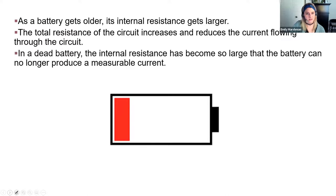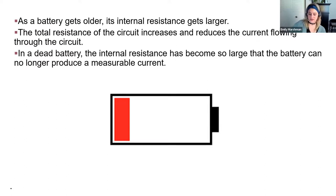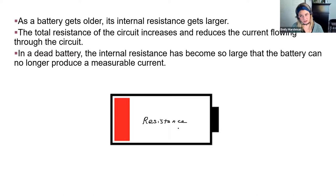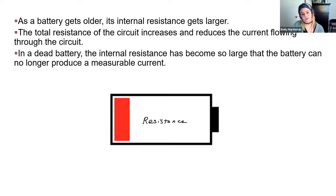What happens when a battery dies? As the battery dies, the chemical reaction inside doesn't happen as efficiently, and the electrolyte starts to break down. The internal resistance of the battery gets very large — even inside a battery there can be resistance. This resistance gets really large over time until there's no measurable current flowing at all. That's what happens when a battery dies.